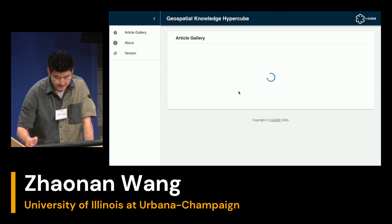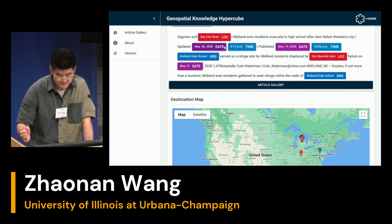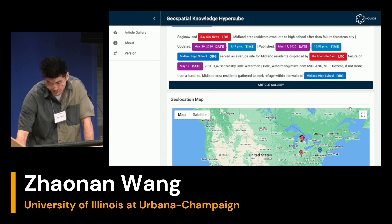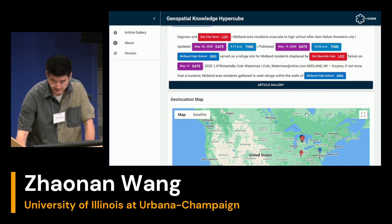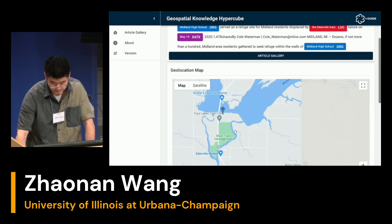Here this news article talks about a dam failure event in Michigan. We can see there are multiple entities: temporal entities like date and time, geospatial entities like location, organization, and facilities are recognized from the raw text, and they are also pinpointed onto a map. This direct linkage between text and the geospatial map actually facilitates the user to understand the geospatial context of the recognized geo-entities. If we click on the geospatial entities — for instance, the Edenville dam — the map will be automatically zoomed in to the geospatial context of that place.